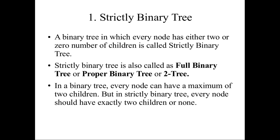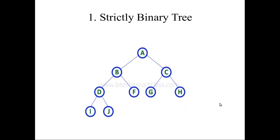So we will now see the type called strictly binary tree. A strictly binary tree is a binary tree where every node should have either two or zero children. The condition is: every node should have a minimum of zero children or a maximum of two children. A strictly binary tree is also called a full binary tree, proper binary tree, or two-tree. In a binary tree every node can have a maximum of two children, but in a strictly binary tree every node should have exactly two children or none.